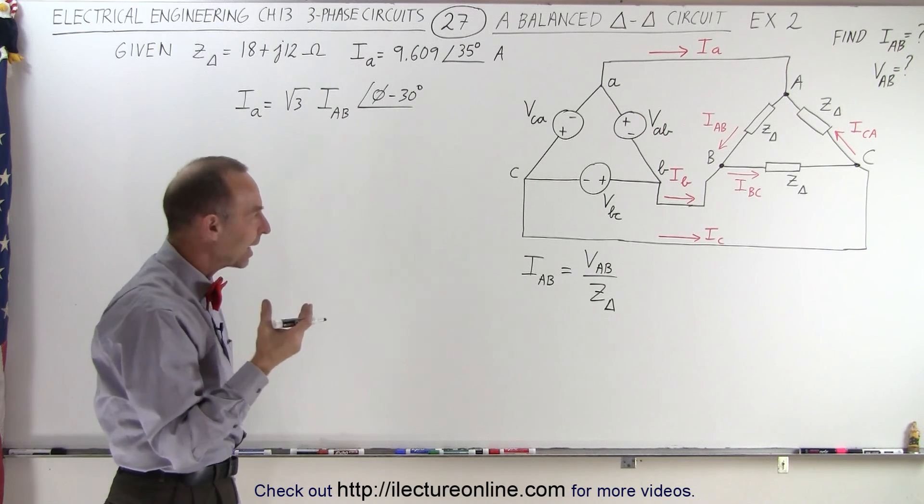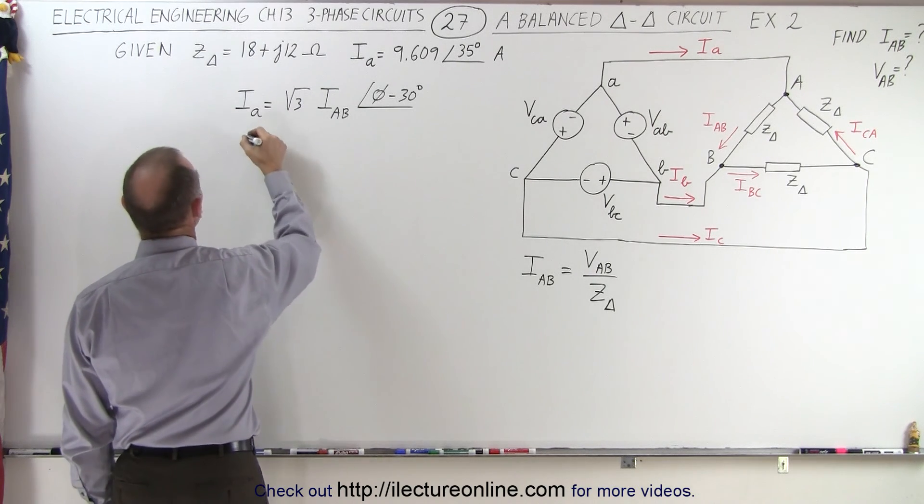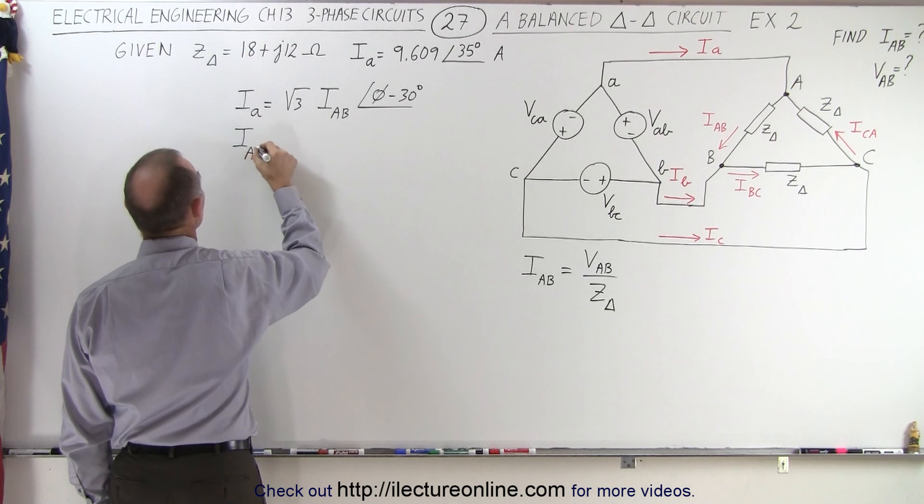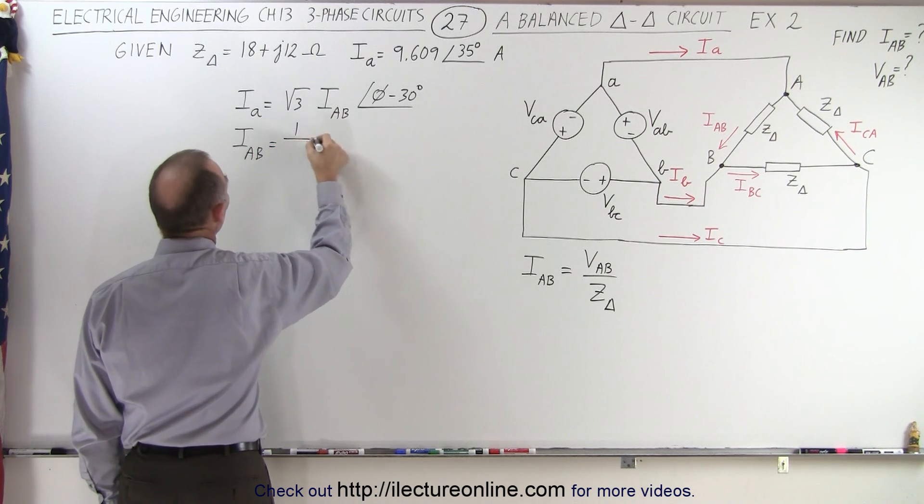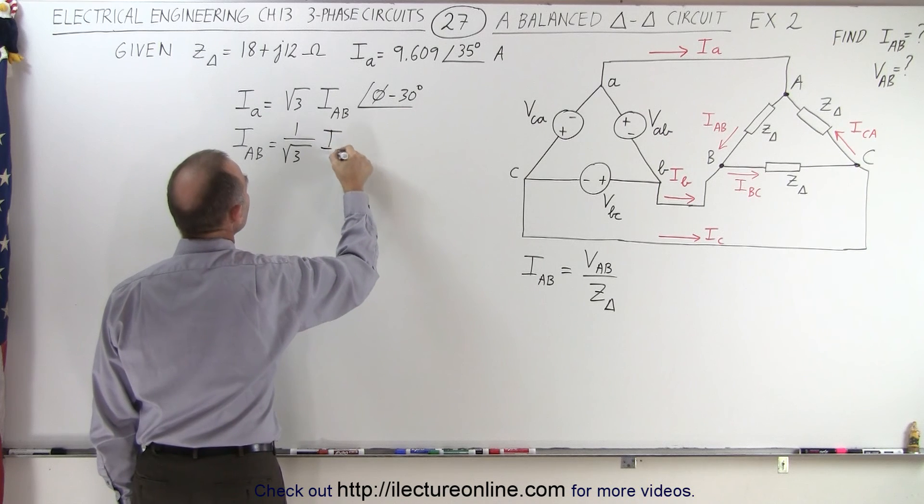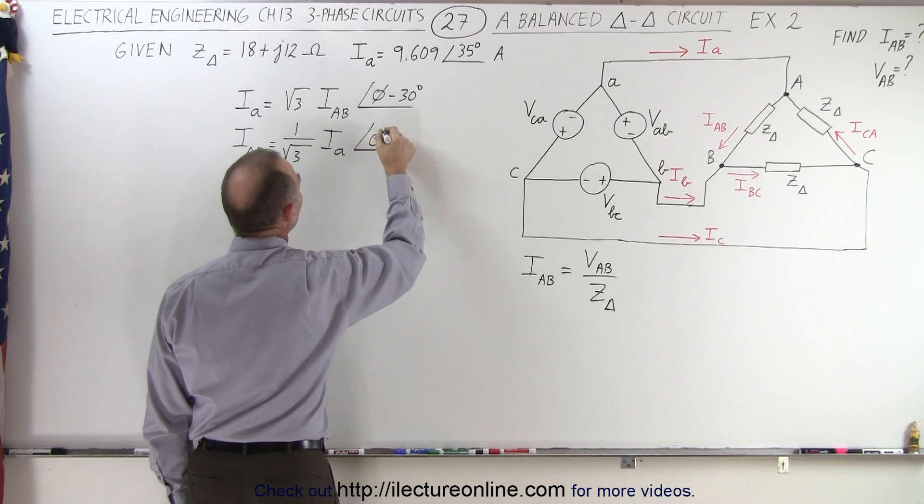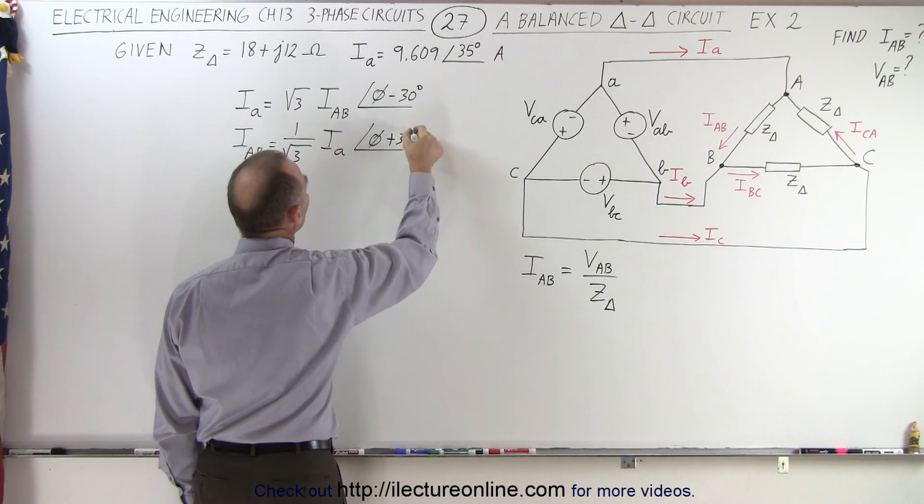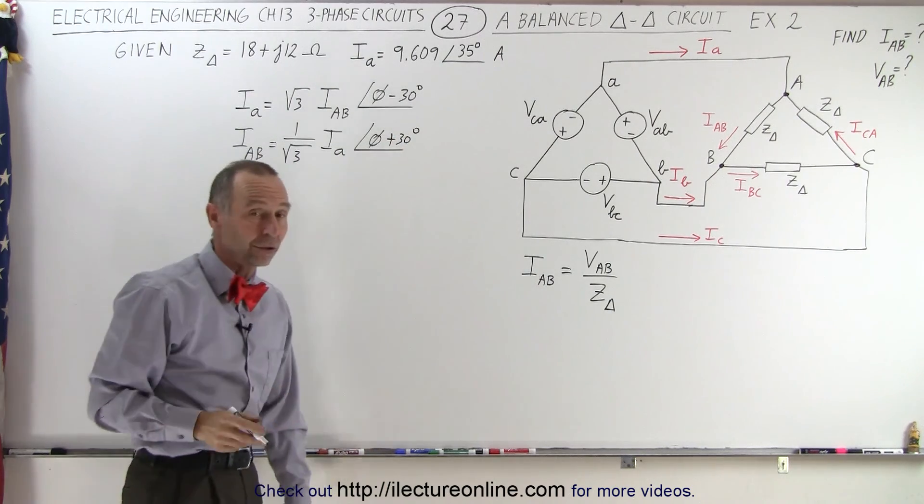So if that is the case, we can reverse that. We can say that IAB is equal to one over the square root of three times IA, and we can take the phase of the line current and add 30 degrees to get the phase of the phase current.